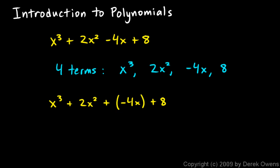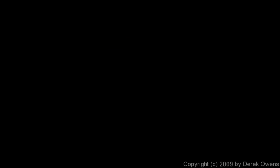Look at these three examples - all of these are not polynomials. This first one, 3x squared plus 2x to the 1.5 plus 8, has a 1.5 exponent. That's not a whole number. Polynomials can only have whole number exponents.